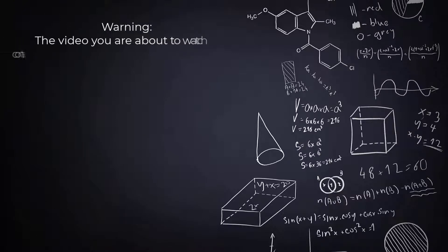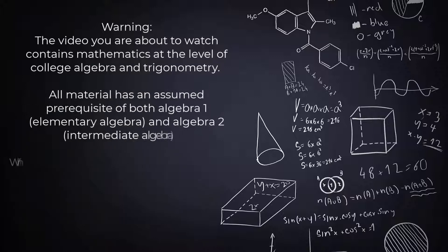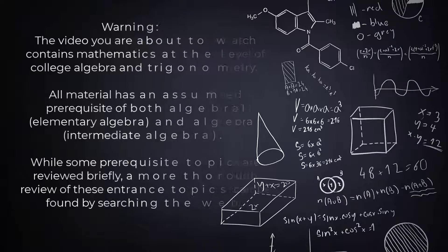Warning! The video you're about to watch contains mathematics at the level of college algebra and trigonometry. All material has an assumed prerequisite of both Algebra 1, which is Elementary Algebra, and Algebra 2, which is Intermediate Algebra. While some prerequisite topics are reviewed briefly, a more thorough review of these entrance topics can be found by searching the web.